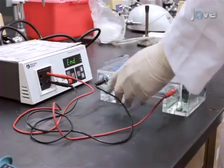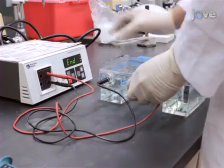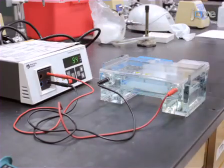Replace the lid. Double check that the electrodes are plugged into the correct slots in the power supply. Turn on the power. Run the gel until the dye has migrated to an appropriate distance.